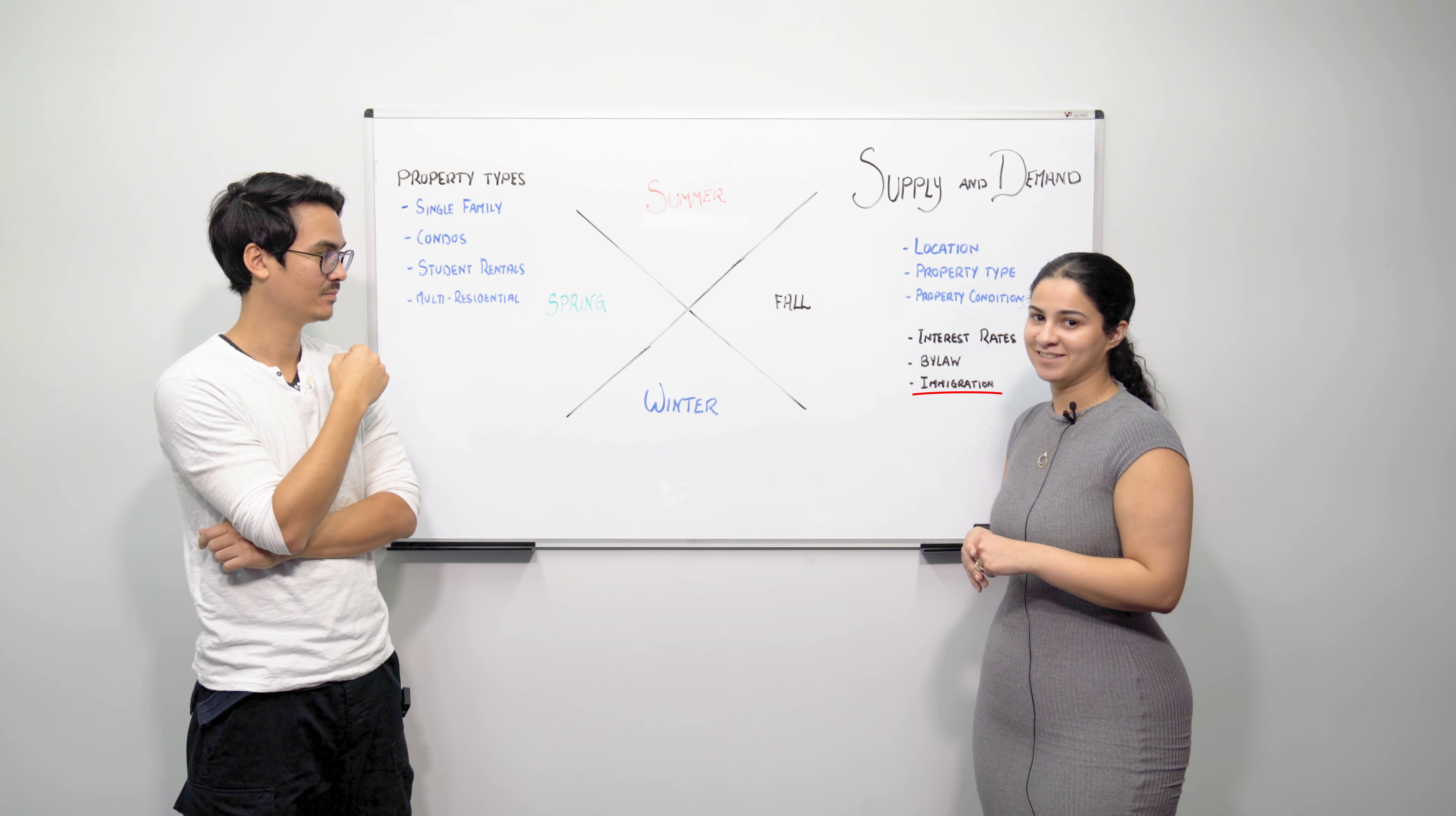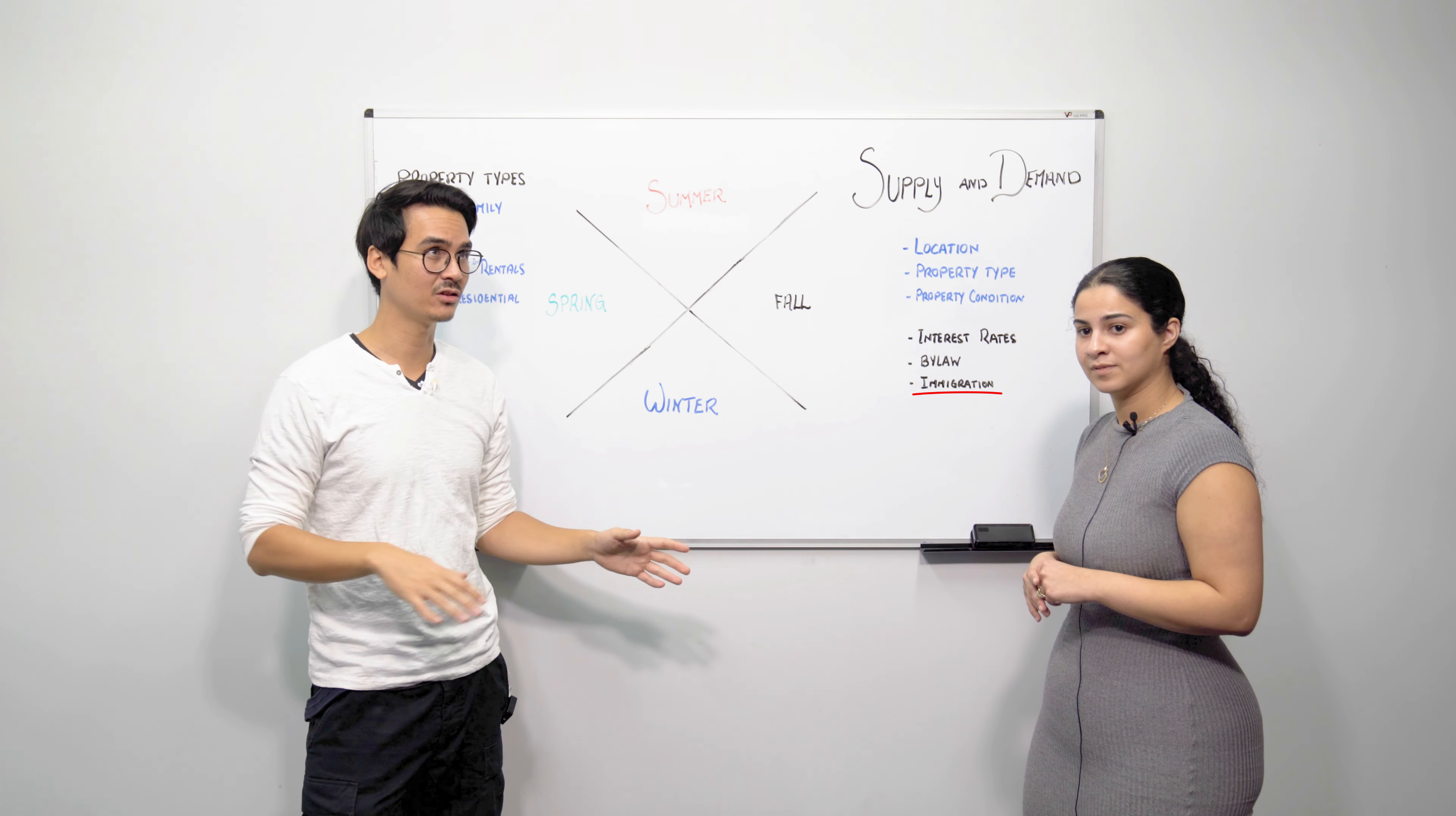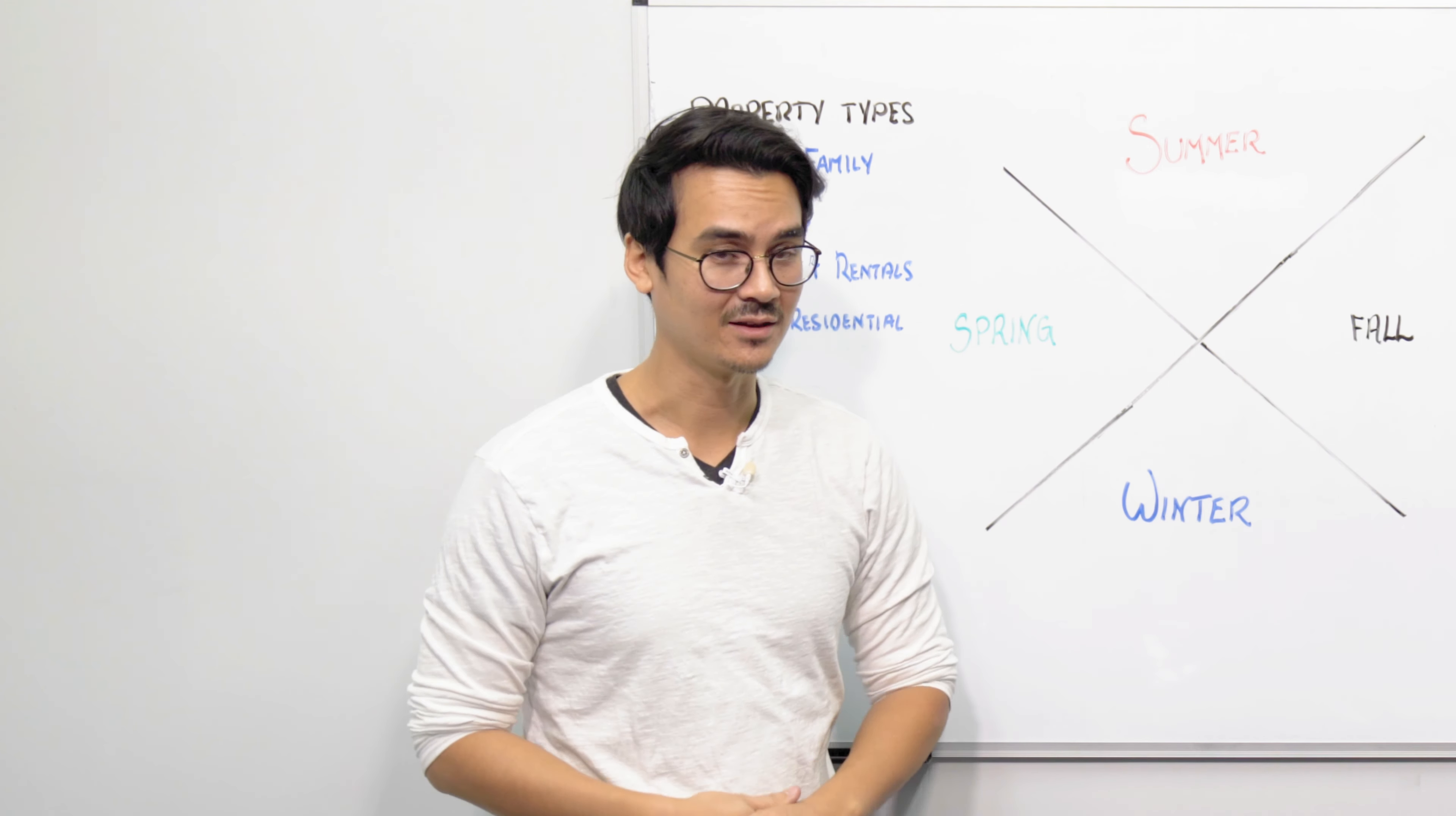Now another thing that is actually really important to consider, especially for immigration, if you're doing pre-construction condos or pre-construction houses, 75%, this was like I think this was last year's statistic, but 75% of new build properties were actually primarily purchased by new immigrants. So there is a demand for that and that's why pre-construction actually works very well. But there are only so many homes that are being built, so if you do have a property you are looking to sell, that immigration is definitely going to affect it.